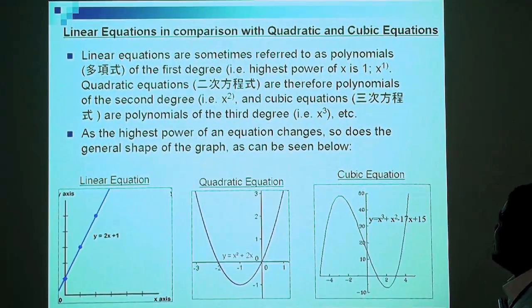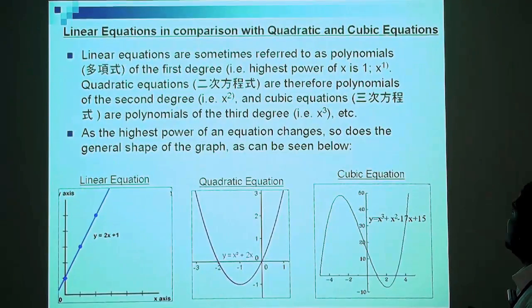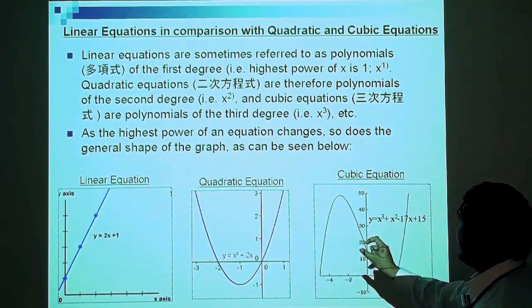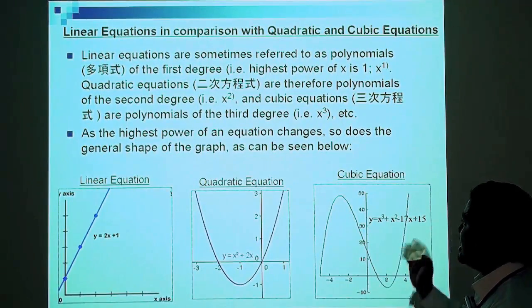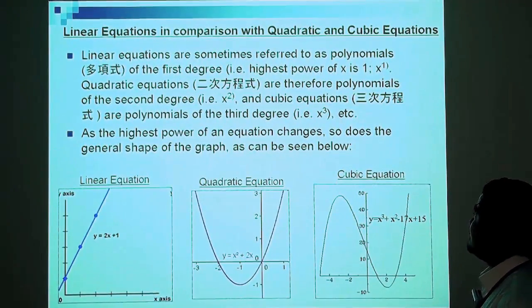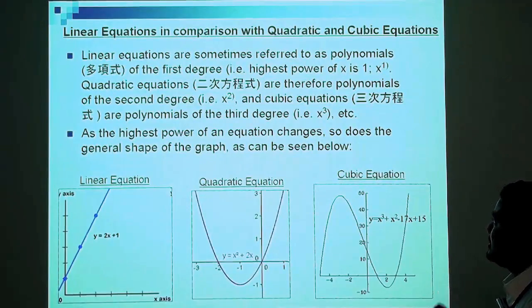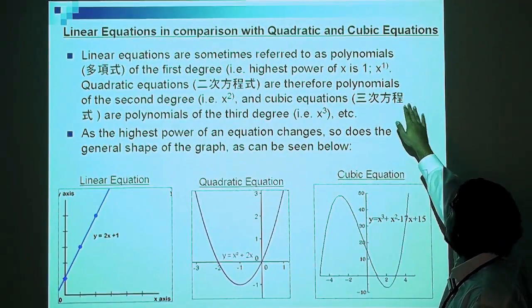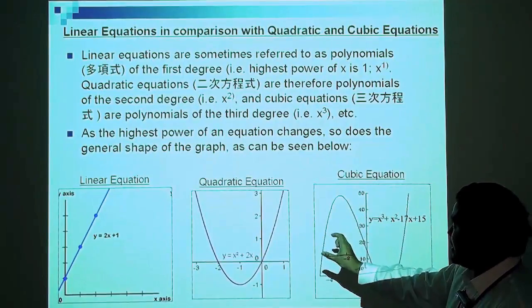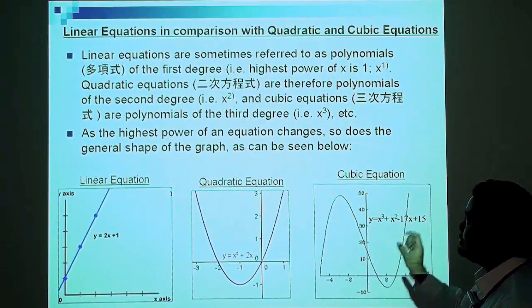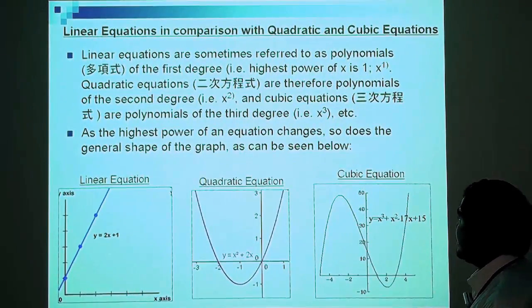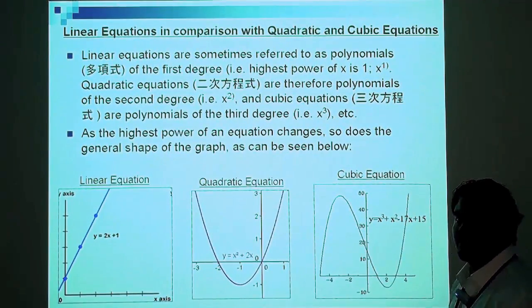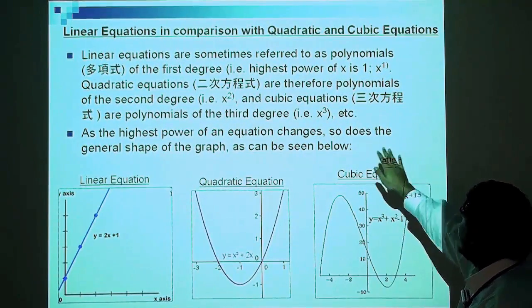Linear equations in comparison with quadratic and cubic equations. What's the difference? Linear equations are sometimes referred to as polynomials of the first degree - the highest power of x is 1. Quadratic equations are therefore polynomials of the second degree, called second degree. And cubic equations are polynomials of the third degree, and so forth.